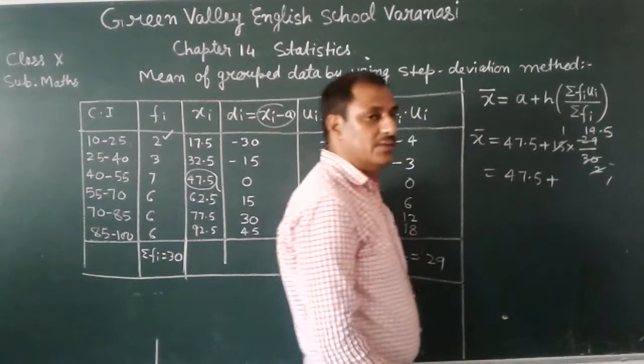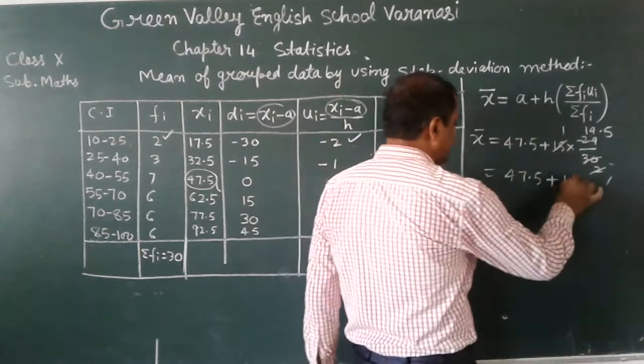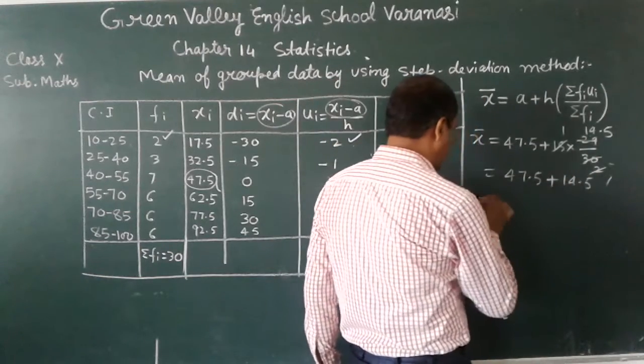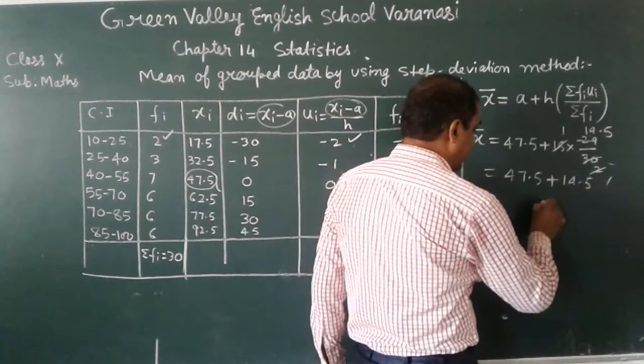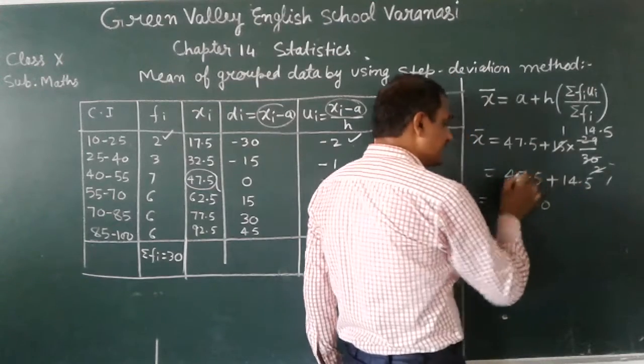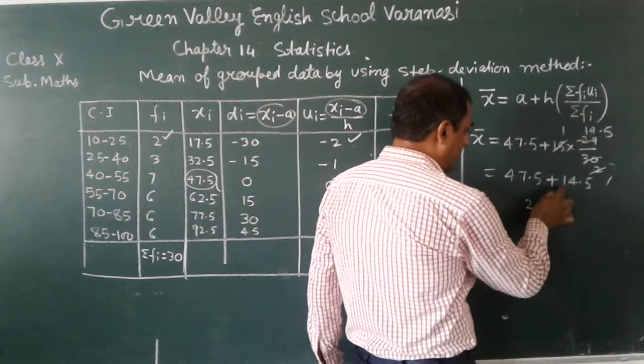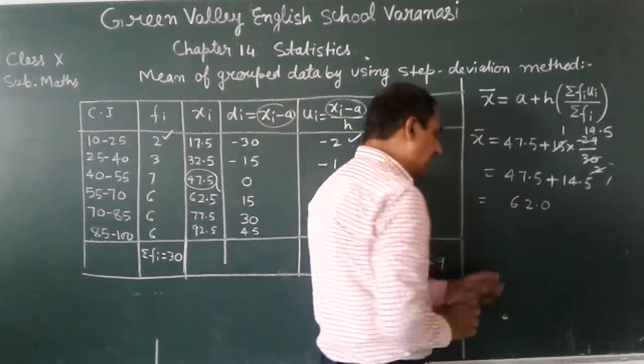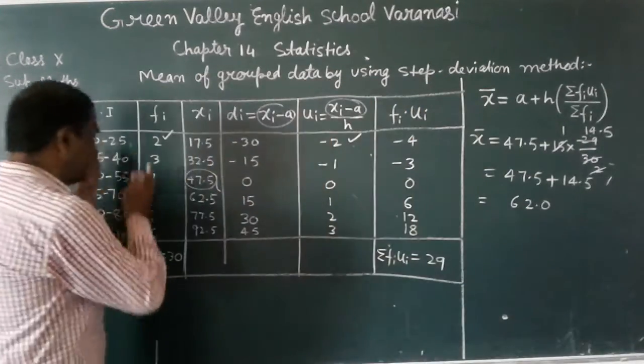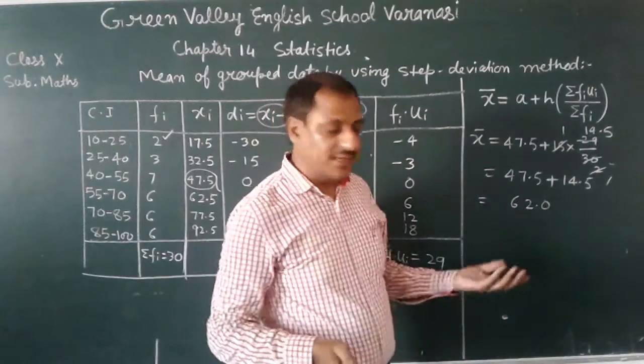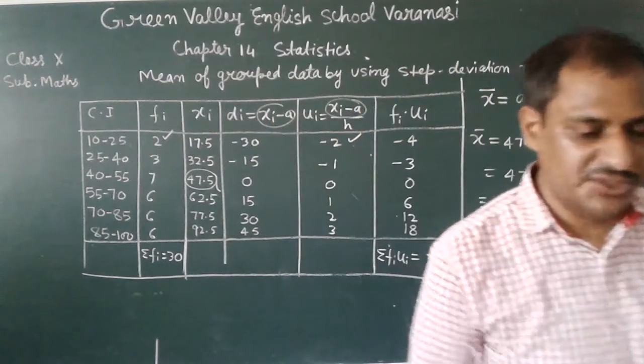47.5 plus 14.5. 5 plus 5 is 10, 4 plus 7 is 11, 11 plus 1 is 12, 4 plus 1 is 5, 5 plus 1 is 6. This is the mean. This is the required mean of this given data. So you will learn. Thank you. This is the required mean. Thank you, thanks so much.